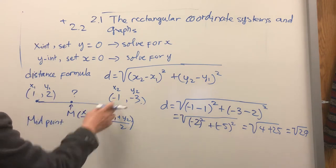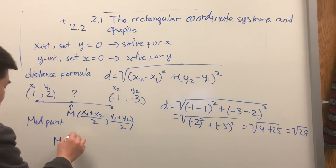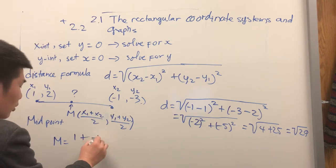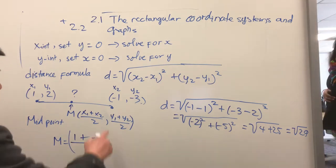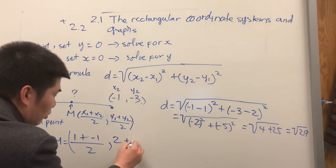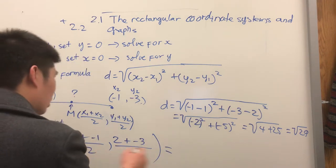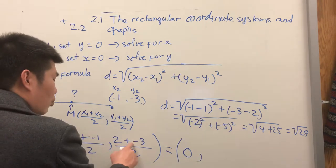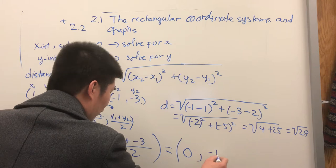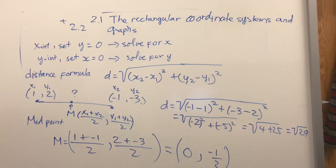For the midpoint of (1, 2) and (-1, -3): m equals (1 plus negative 1) over 2, comma, (2 plus negative 3) over 2. This gives 0 divided by 2 equals 0, and negative 1 over 2. So the coordinate of the midpoint is (0, negative one-half).